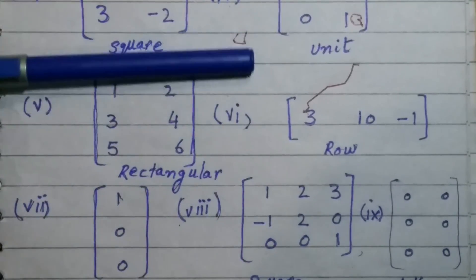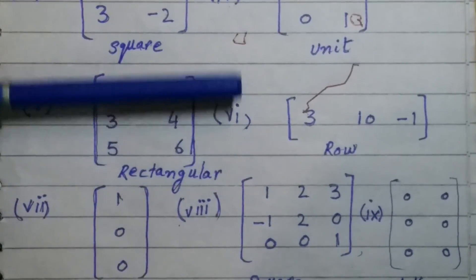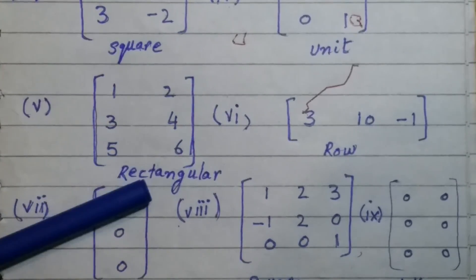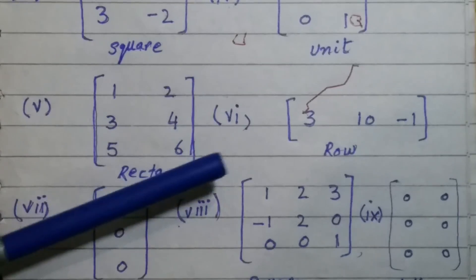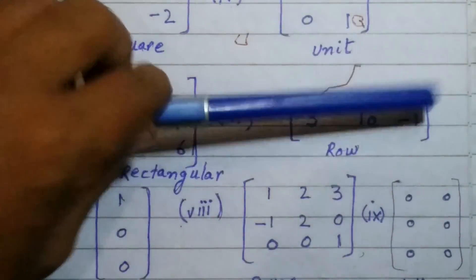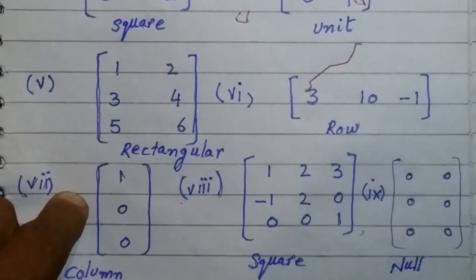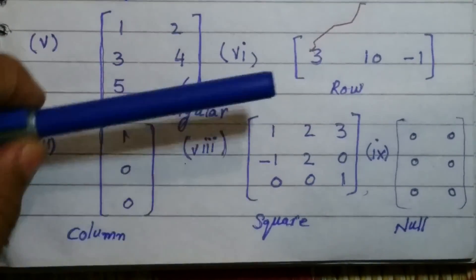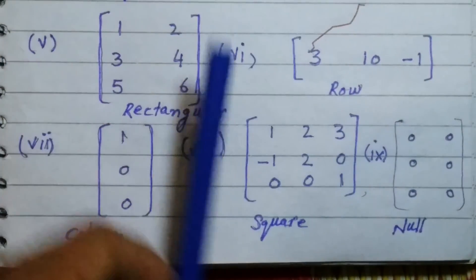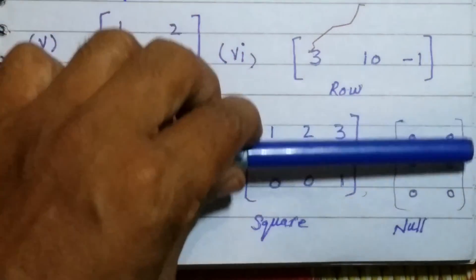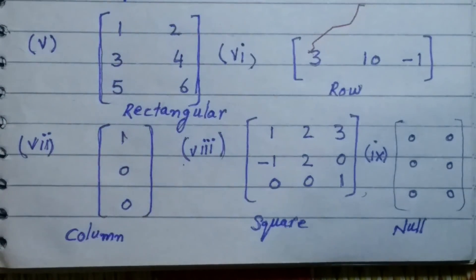You can again see here that there are three rows but two columns, so number of rows and columns are not equal, so it is a rectangular matrix. It is a row matrix because it has only one row. It is a column matrix because it has only one column. And here there are three rows and three columns so it is a square matrix. And here all the entries are zero so it is a null matrix.